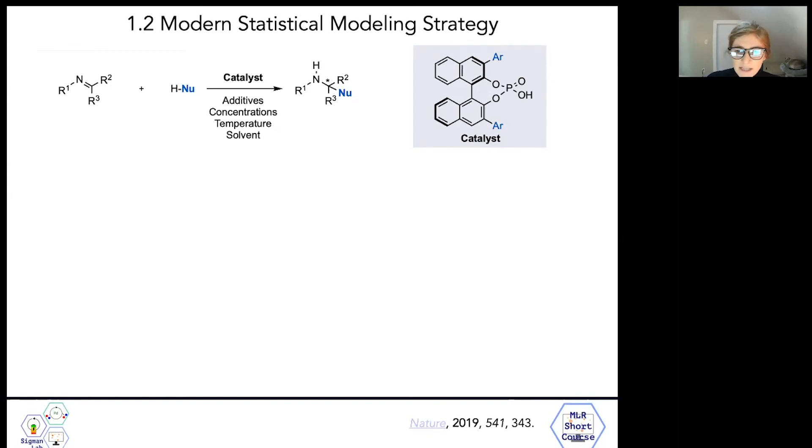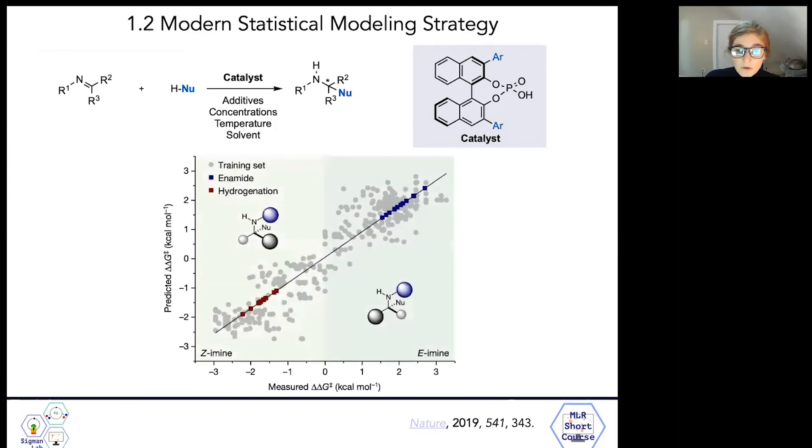Matt's going to talk about this study in a separate video, but I want to highlight that in this analysis, Jolene was able to use our statistical modeling strategy to develop a model that differentiates between the two nucleophilic addition mechanisms, which proceed either through the Z or the E imine. This was our group's first example of modeling a large number of variable reaction conditions, including changes to the substrate, nucleophile, and catalyst, but also different solvents, differing additives, temperatures, and concentrations of all of the reaction components.